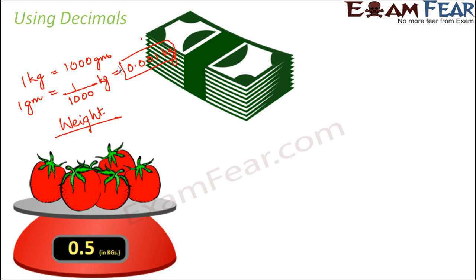Next is money. So how do we use decimals in money? Now in money also, we have two sets of currencies in India, like we have rupee, we have paisa. So we say that 100 paisa is 1 rupee. So 1 rupee is equal to 100 paisa. So that actually means that 1 paisa is equal to 1 by 100 rupees, that is 0.01 rupees.